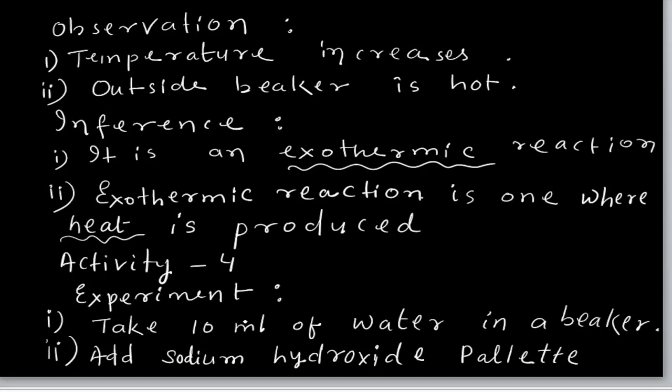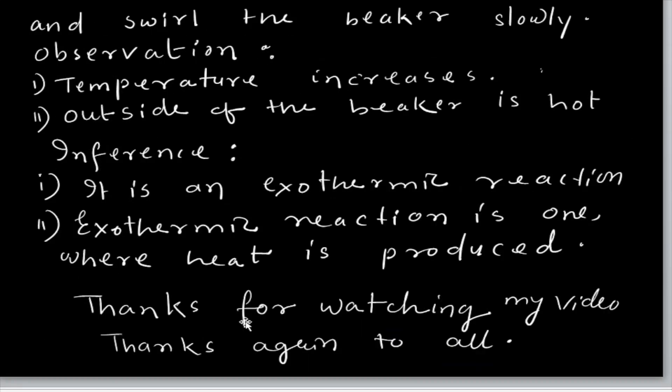Activity 4. Experiment: take 10 ml of water and add sodium hydroxide. Sodium hydroxide is generally in pellet form. When you add sodium hydroxide to water in a beaker and stir slowly, the temperature increases. Temperature increases means it is an exothermic reaction. The outside of the beaker also becomes hot, confirming it is an exothermic reaction — one where heat is produced.